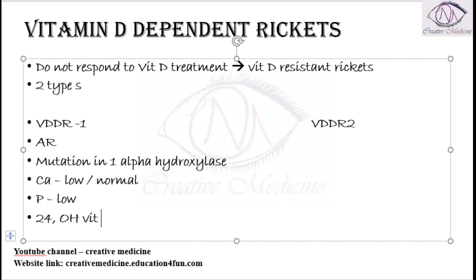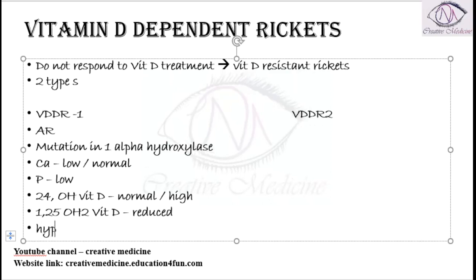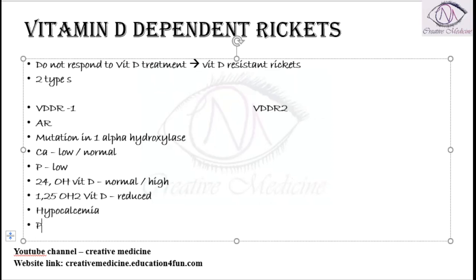Normally, 25-hydroxy vitamin D3 is converted by 1-alpha hydroxylase into 1,25-dihydroxy vitamin D3. But here, due to the 1-alpha hydroxylase deficiency, this conversion is reduced, resulting in hypocalcemia. Because of hypocalcemia, parathyroid hormone levels increase.